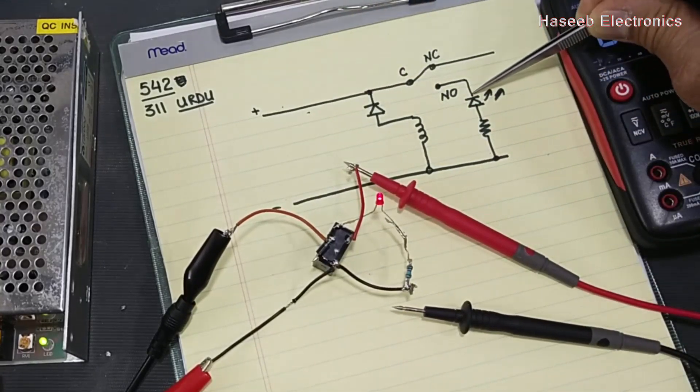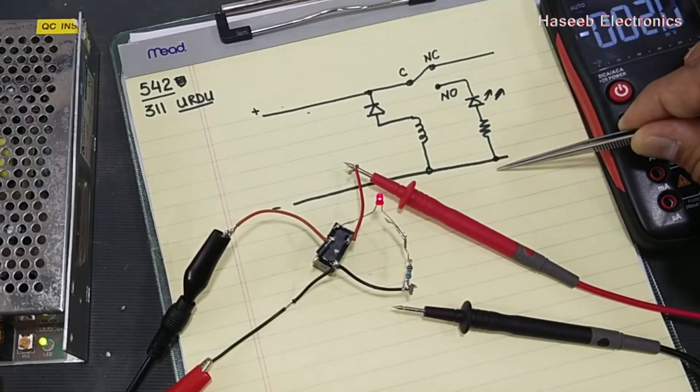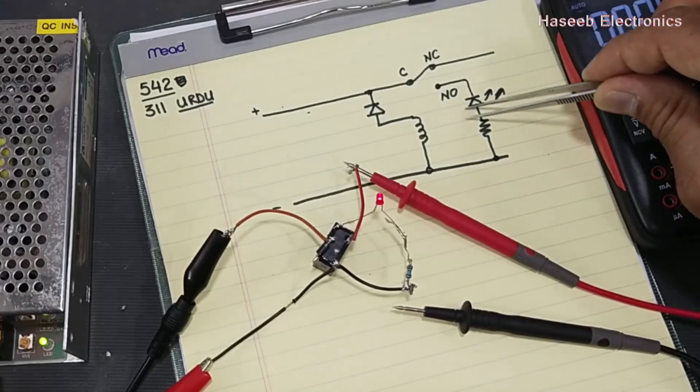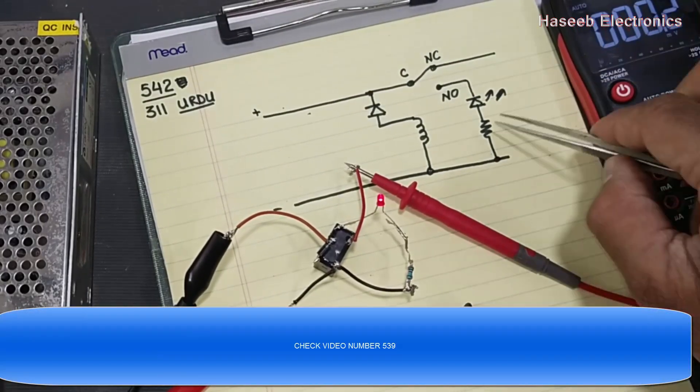Now this line is negative, so negative is connected to LED cathode, positive here. This LED is now turned on. How to calculate this resistor, you can see in previous videos.